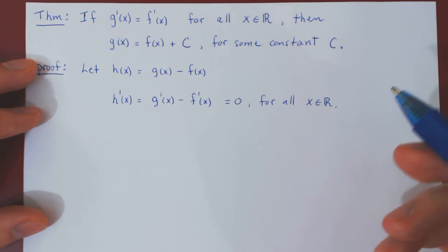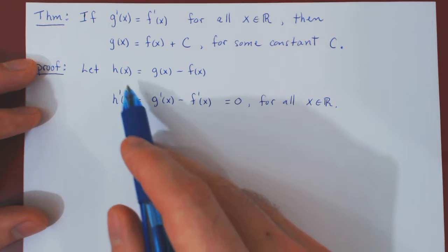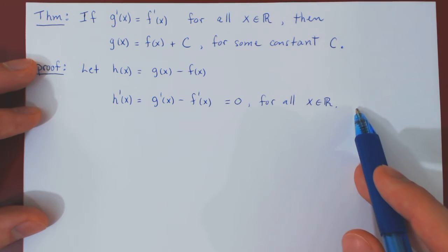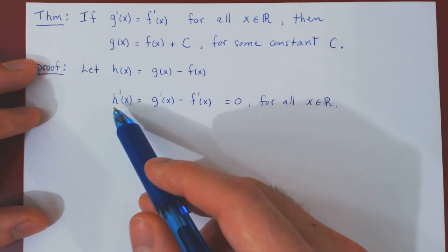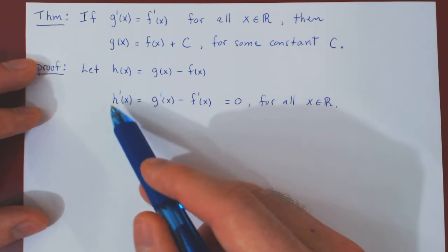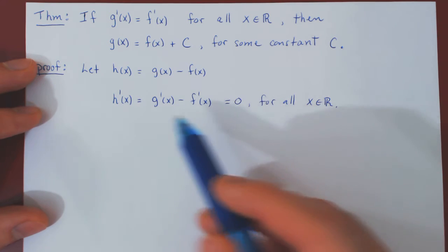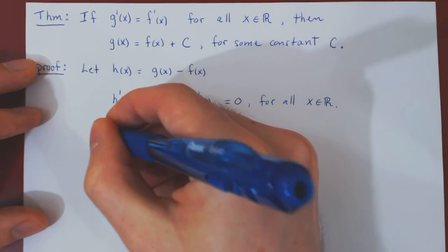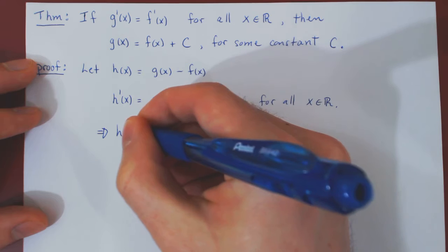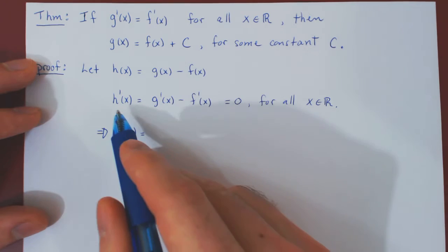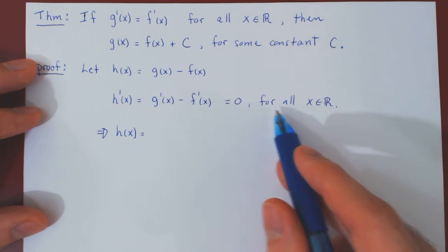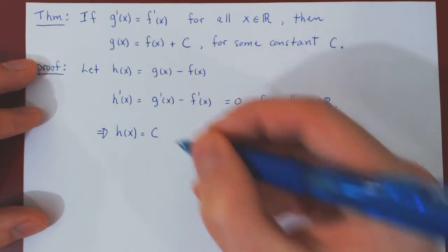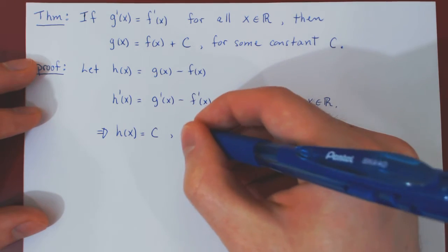And now we can quote the result of our previous video. If a function has a derivative that is equal to zero for all values of x, recall the intuition, the rate of change of the function is always zero, so the function is never changing, therefore it must be a constant function. So the function h having a zero derivative for all values of x must be a constant function. So h of x equals C for some constant C.